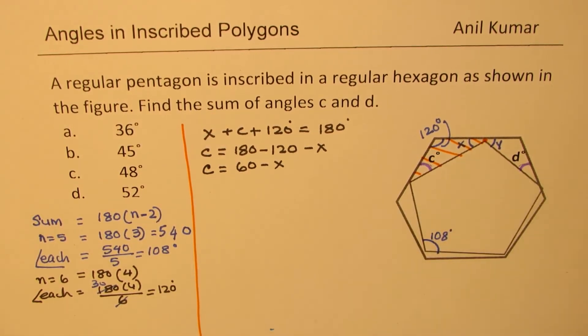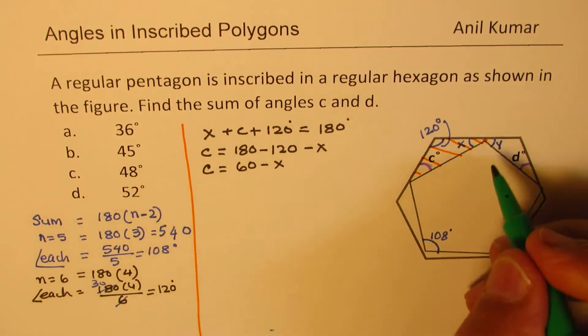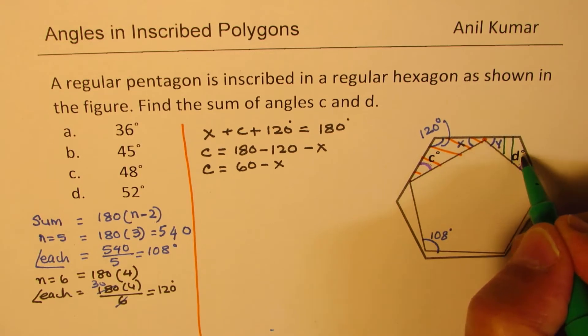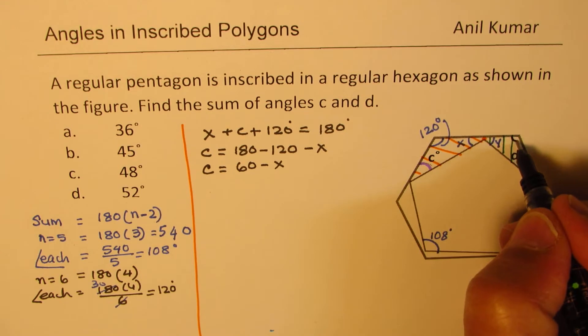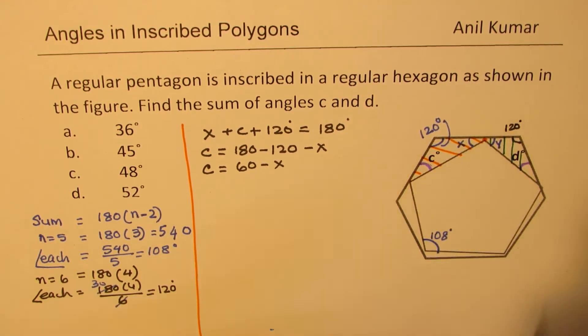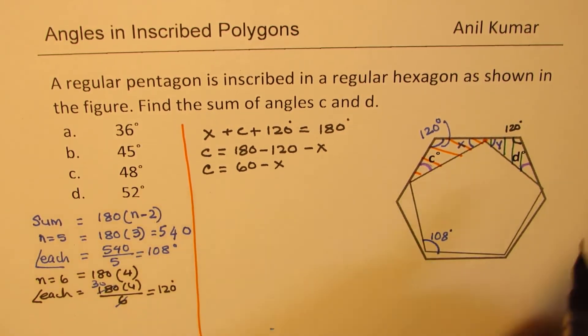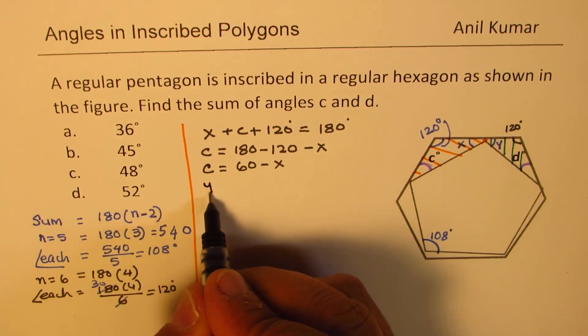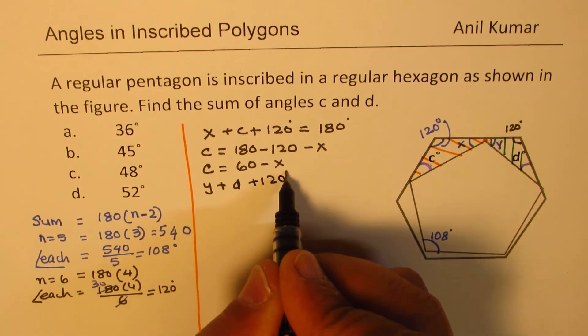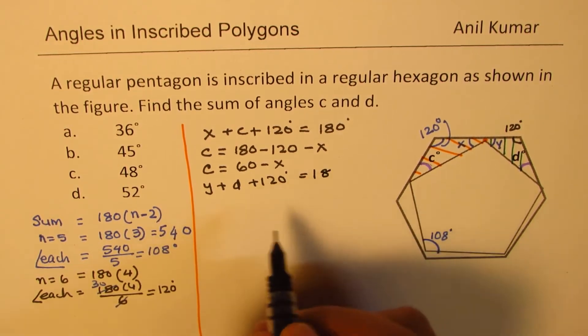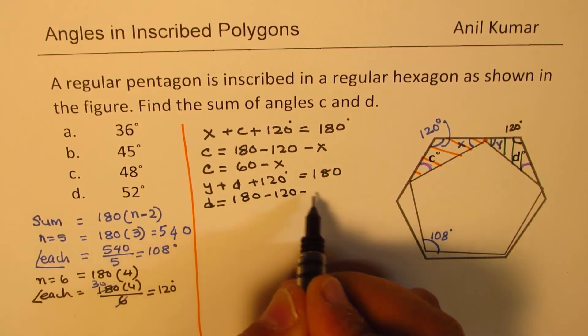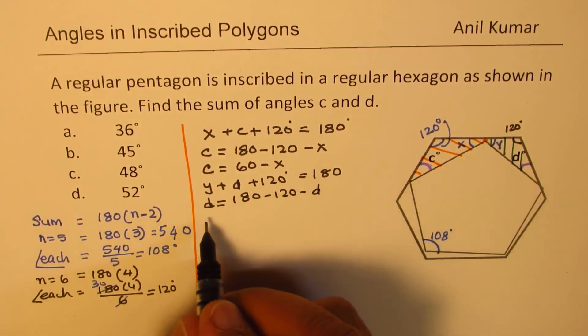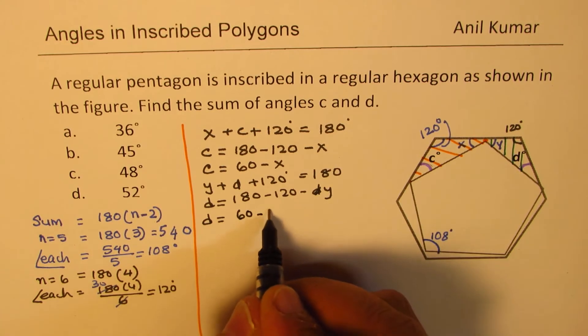Similarly, we can now consider the other triangle. In the other triangle, also this angle is 120 degrees. And therefore, we get that this time we're saying this is Y. So we have Y plus D plus 120 degrees is 180. So we can say D is equal to 180 minus 120 minus Y, so that gives you D as 60 minus Y.